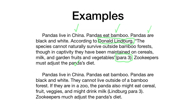Let's look at the next paragraph — it's the same thing but a little different. Pandas live in China, pandas can eat bamboo, pandas are black and white. They cannot live outside of the bamboo forest. If they are in a zoo, the panda might also eat cereal, fruit, vegetables, and might drink milk. Then I wrote 'Lindbergh, paragraph three.' I was paraphrasing what he wrote in his article, but even though those are my words, it's his idea, so I needed to put in the citation. Then: zookeepers must adjust the panda's diet.